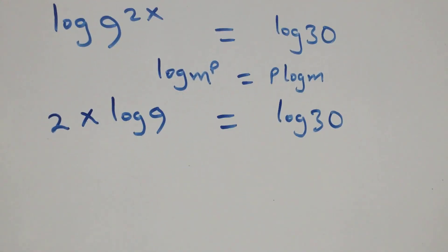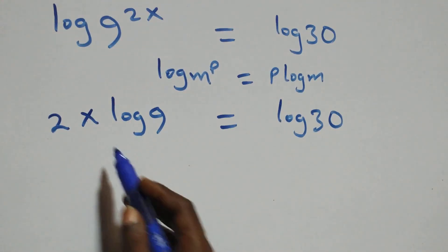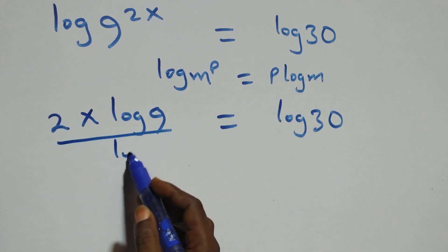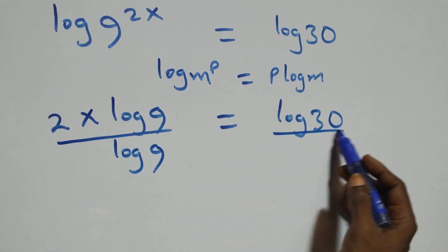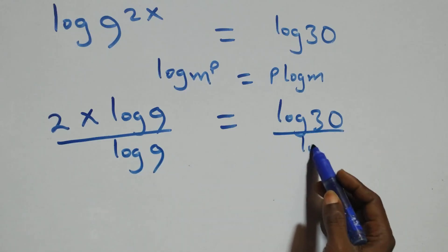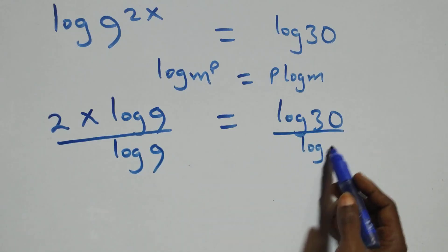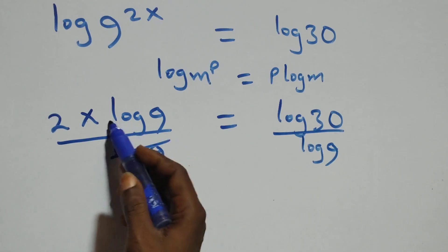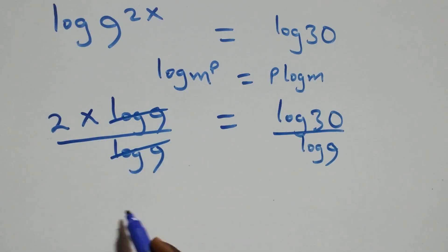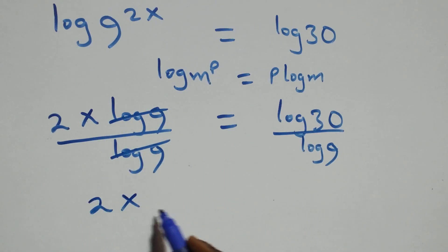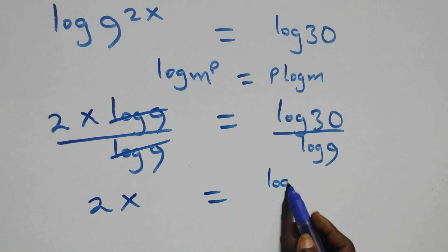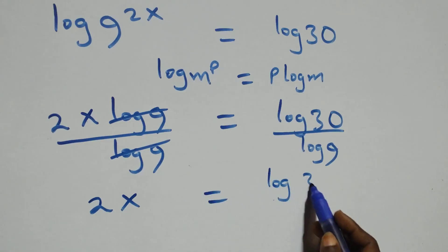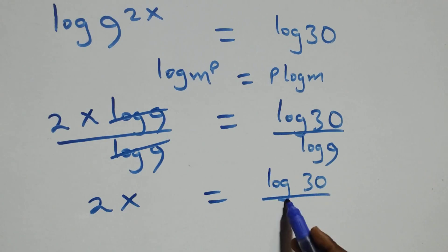The next step: we divide both sides by log 9. Dividing this side by log 9 and also this side by log 9, log 9 cancels, giving us 2x equals log 30 over log 9.